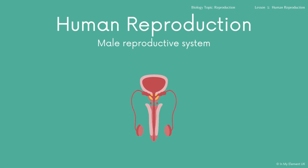Now we take a look at the male reproductive system. There are several parts you need to be aware of. You can see the bladder — it is labelled because it is linked to the urethra, which is how urine leaves through the penis. You've also got the glands, which produce a liquid that is added to the sperm to make semen. You've got a sperm duct that connects the glands to the testes — that is how the sperm will travel through the sperm duct.